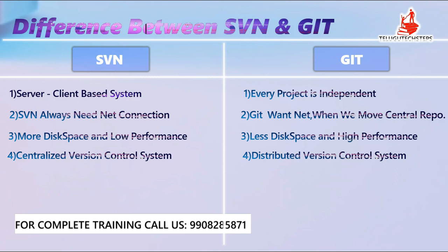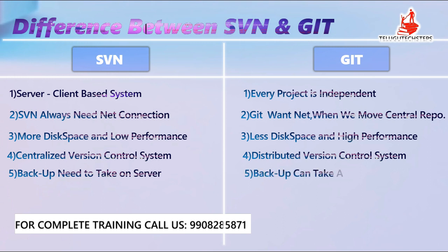Coming to the fifth point — backups: in SVN, the complete application is on the server, so there is a high chance of data loss if the server fails. Backup depends on the server. In Git, backup can be taken by each client through their local repository, so every developer's local repository serves as a backup.